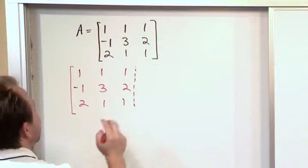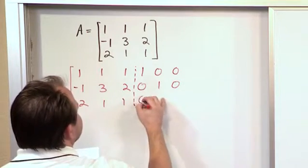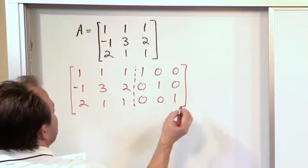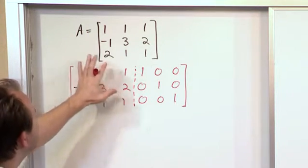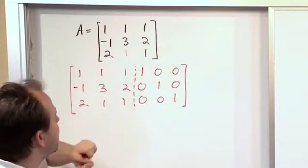And then on the right-hand side, you put an identity matrix. So you're putting 1s along the diagonal and 0s everywhere else.